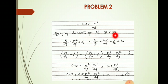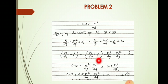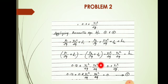Applying Bernoulli's equation between points 1 and 2: p1 by rho g plus v1 squared by 2g plus z1 equals p2 by rho g plus v2 squared by 2g plus z2 plus hl. Rearranging: p1 by rho g plus z1 minus p2 by rho g plus z2 plus v1 squared by 2g minus v2 squared by 2g equals hl. This is equation number 1.